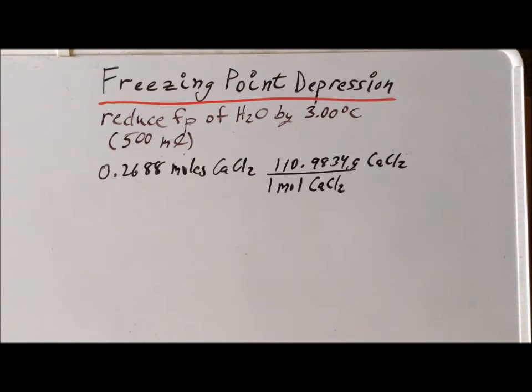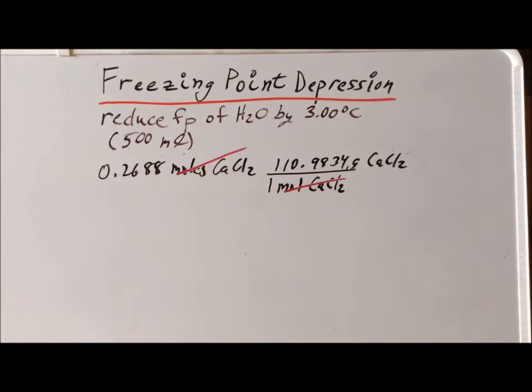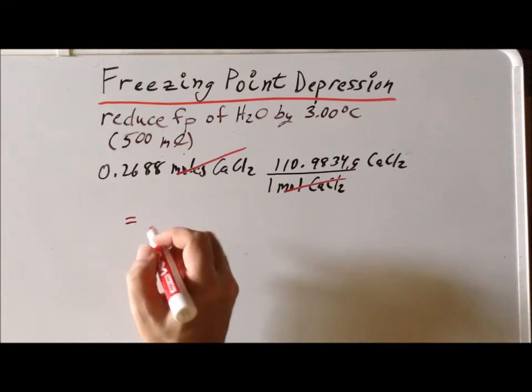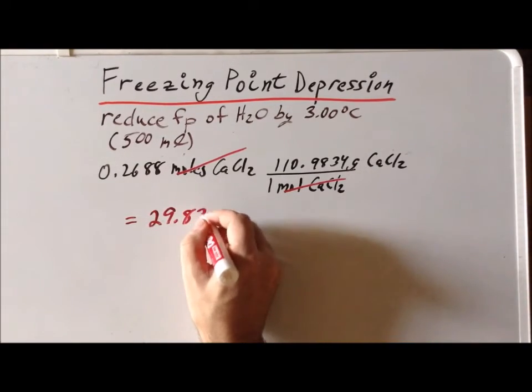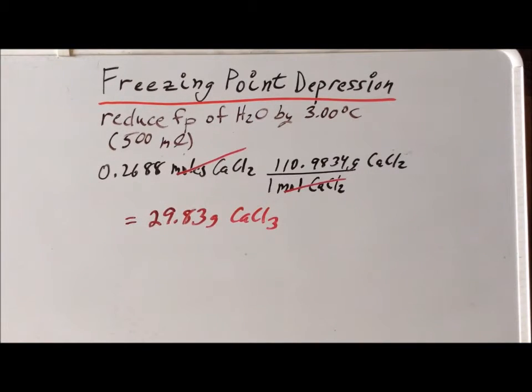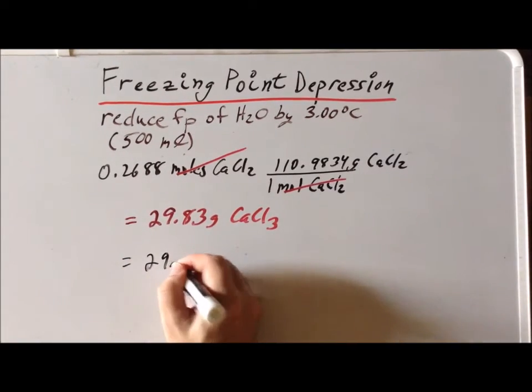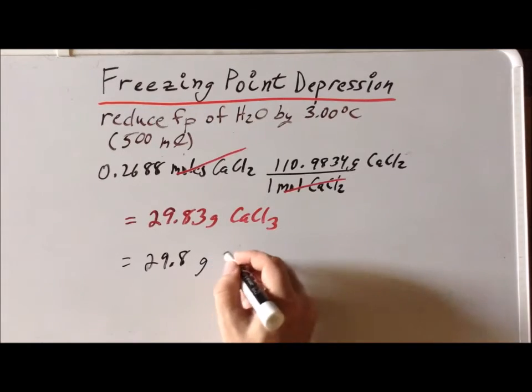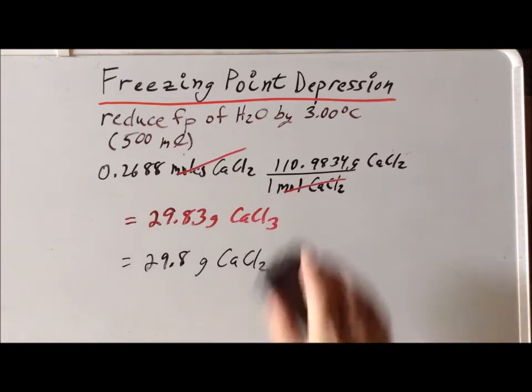It's very good to double check that we can cancel units properly. Moles of calcium chloride cancel, and we determine that we get an answer of 29.83 grams of calcium chloride. Since the smallest number of significant figures that we've used in the calculation is three, we want to round this to 29.8 grams of calcium chloride. Of course, this should be a two, not a three.